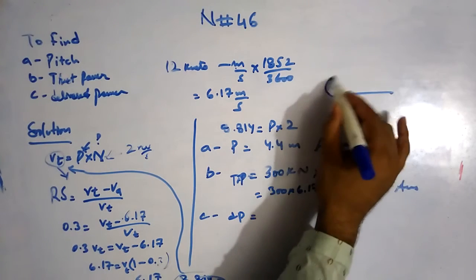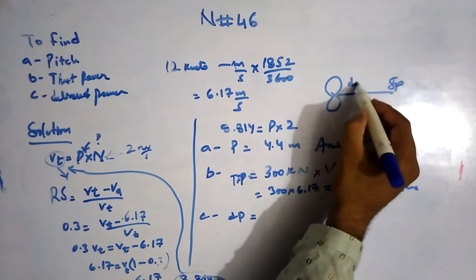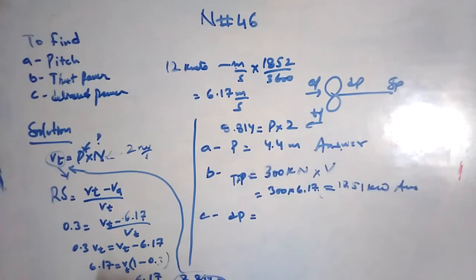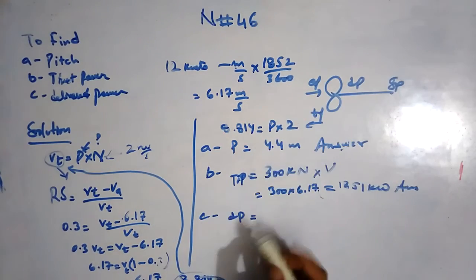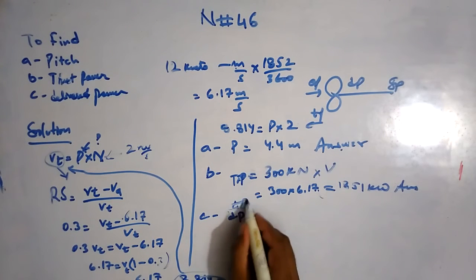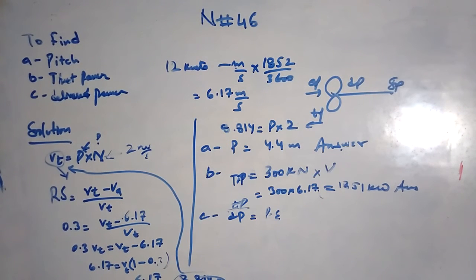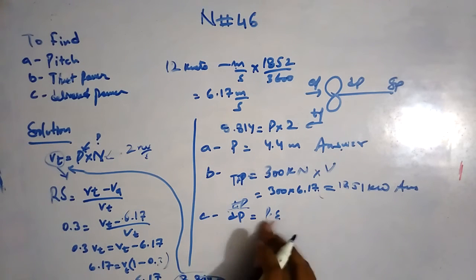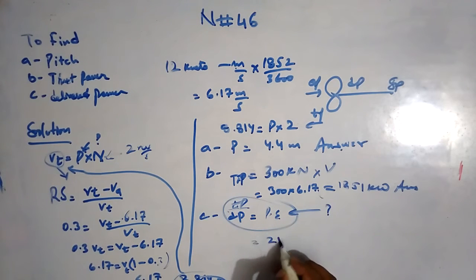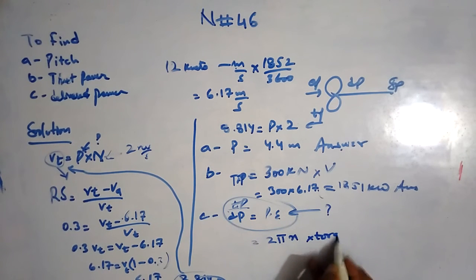Part C is delivered power. For delivered power, I have shaft power, delivered power, thrust power, and effective power. I now have thrust power, so I could calculate from thrust power divided by delivered power equals propeller efficiency. But I don't have propeller efficiency.